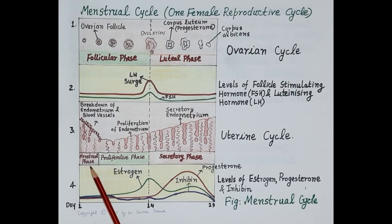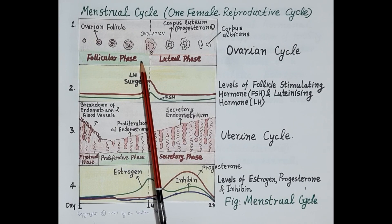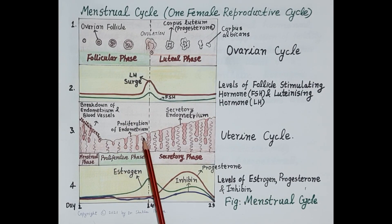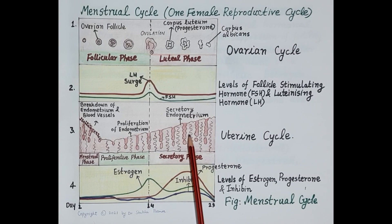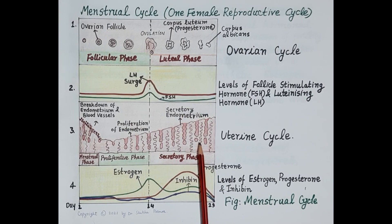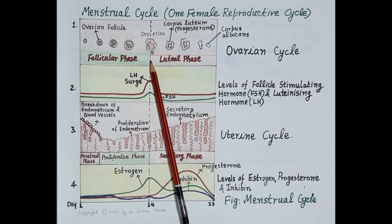There are three phases in the uterine cycle: the menstrual phase, proliferative phase, and secretory phase. During the follicular phase, rising estrogen levels cause proliferation or thickening of the endometrial uterine lining, preparing the uterus for implantation of a fertilized egg. Progesterone, produced during the luteal phase, further makes the uterine lining vascular — increasing blood supply to the endometrium and stimulating uterine glands to produce secretions necessary to provide nutrition to the fertilized egg.